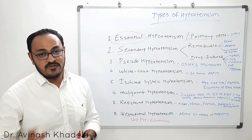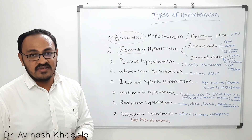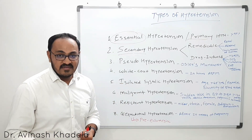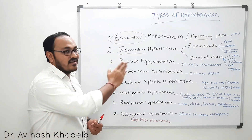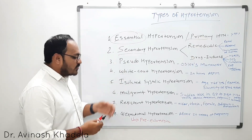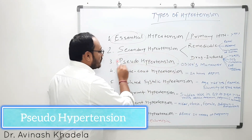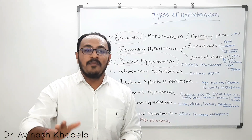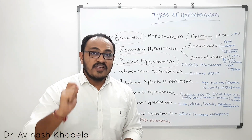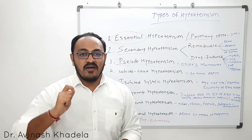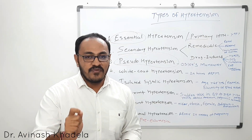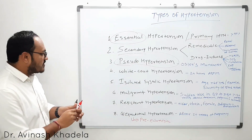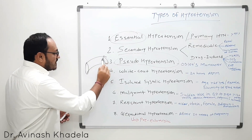The next six types of hypertension are very essential to understand because they are very commonly misdiagnosed with respect to primary and secondary hypertension. The most important is pseudo hypertension, which is diagnosed mainly in elderly patients — after 60 or 65 years of age, blood vessels become stiff due to calcification.